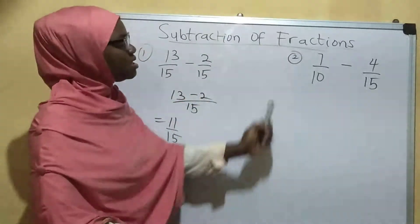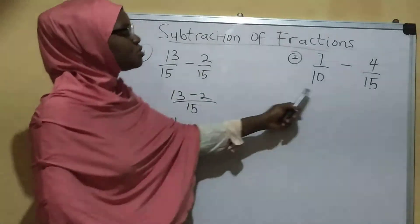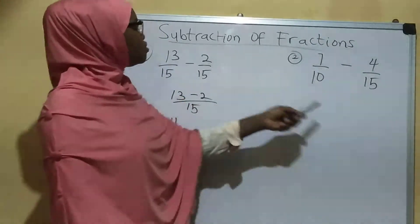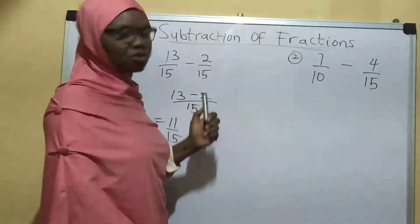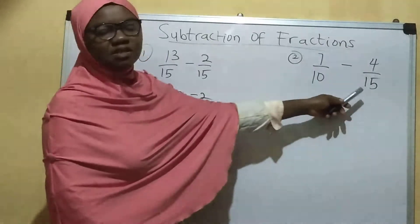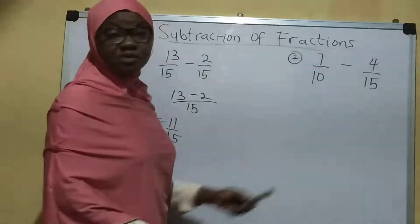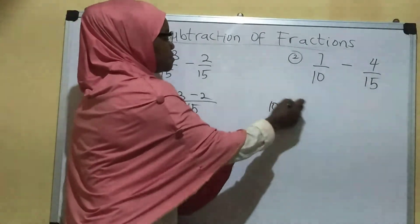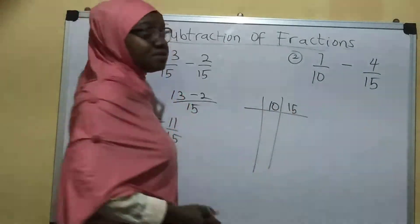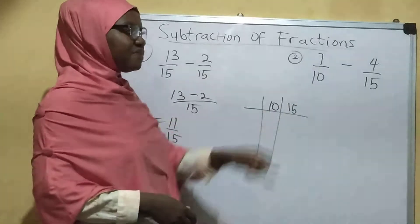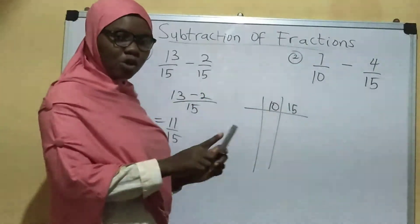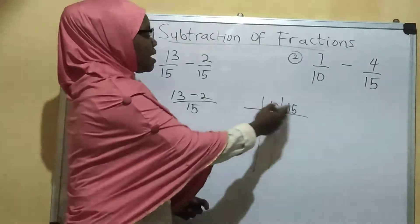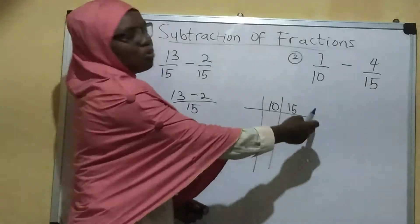Now let's look at this other example. This one is different in the sense that it does not come with the same denominator — they have different denominators. As such we cannot do it straight away the way we did the first one. So what we are going to do is to look for the LCM of both of them, of 10 and 15. Now to look for the LCM of 10 and 15, we need to find a common number with which both can divide.